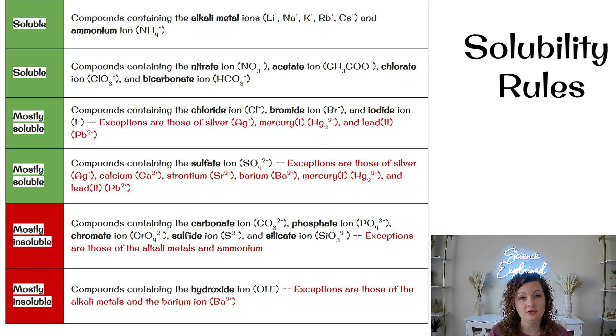So let's just kind of quickly look through them and make sure we have our guidelines in order. So first up, I've separated this with green, meaning that it is soluble or mostly soluble, and then red, meaning that it's insoluble or is not going to be dissolving. So let's start at the top with the things that are definitely soluble and will dissolve.